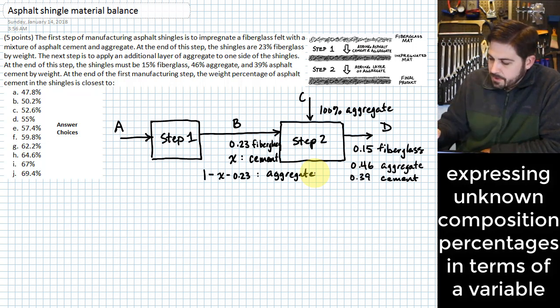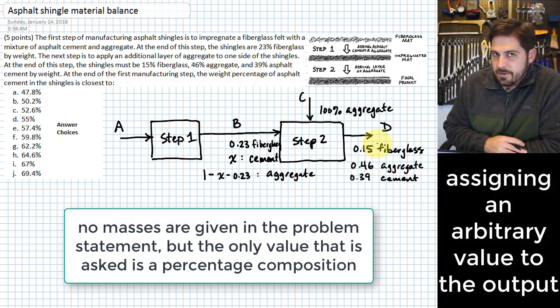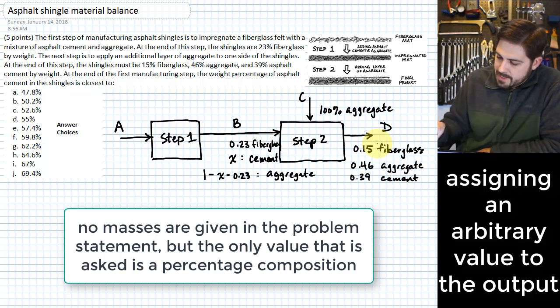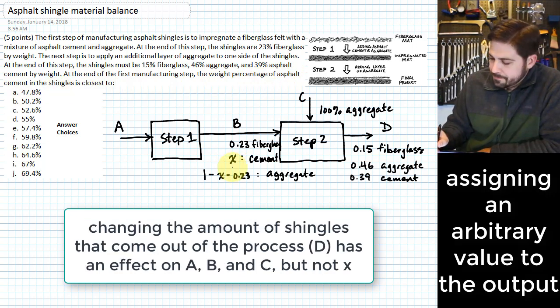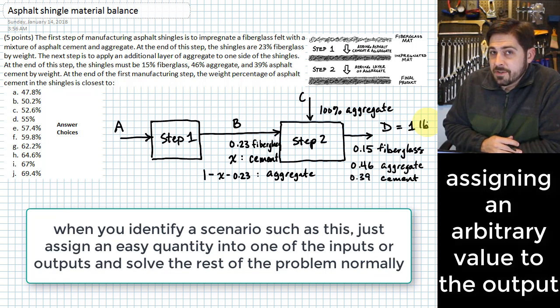So what's difficult about this is that we don't have any mass flows. We don't know any of these mass flows. That must mean that it doesn't matter for what is being asked. What we ultimately are being asked is for the weight percent asphalt cement in the shingles. That's this X variable right here. To get that X variable, it must not matter exactly the amount that is moving through this process. And because it doesn't matter, we can just assign a value that's easier for us to work with into one of these variables. And I suggest we do it to that final amount out.